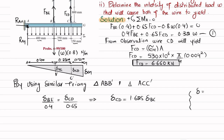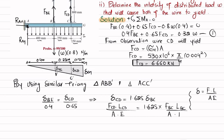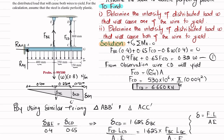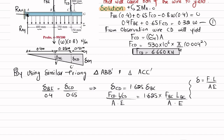Since the change in length δ = F·L / (A·E), and both wires have the same length, area, and modulus of elasticity, the lengths and AE terms cancel. This gives FCD = 1.625 · FBE — call this Equation 3.